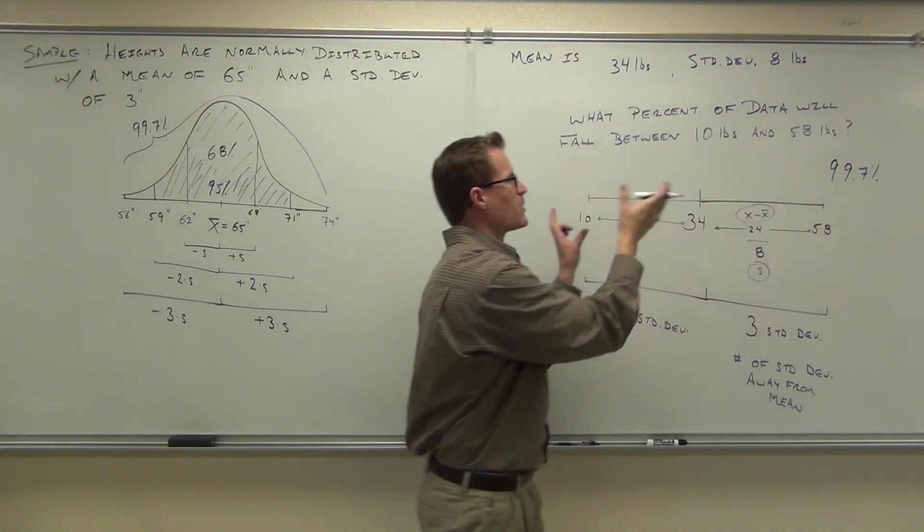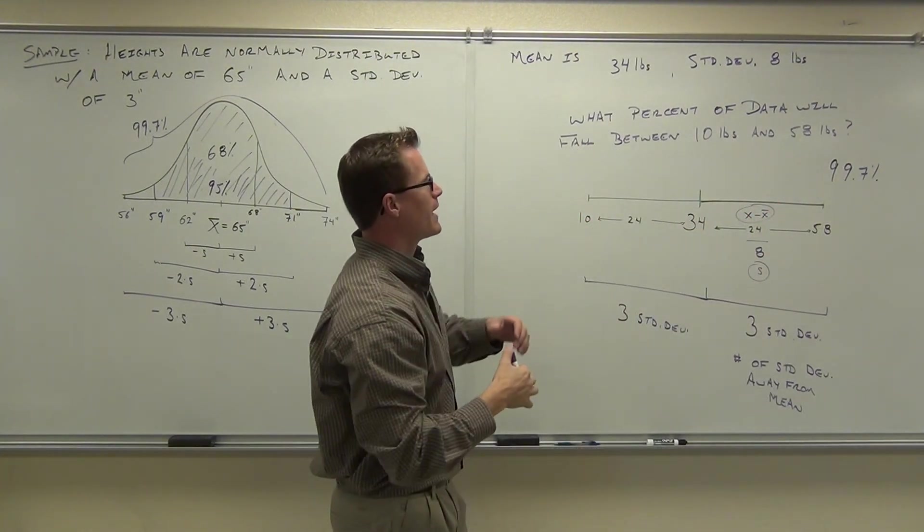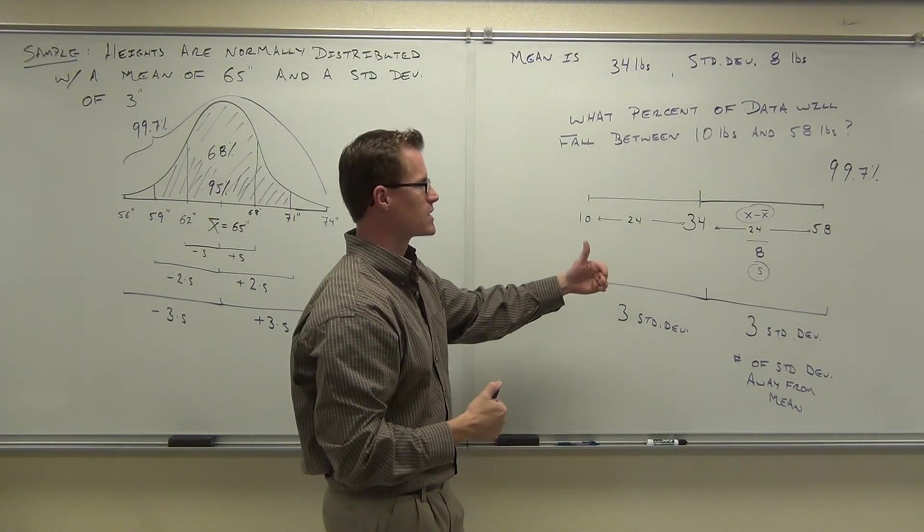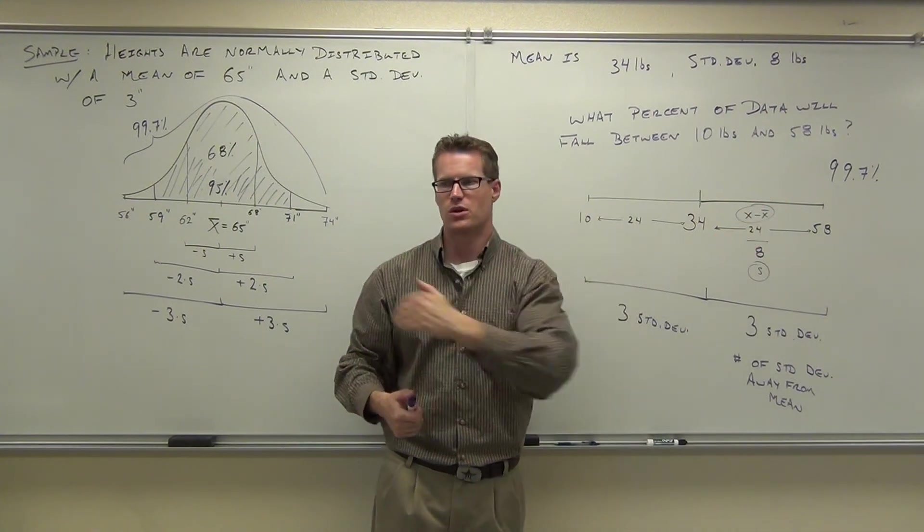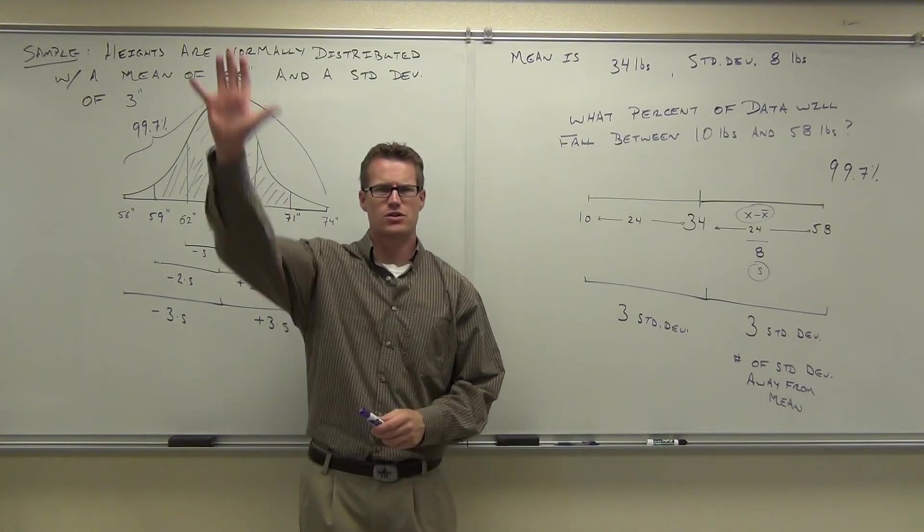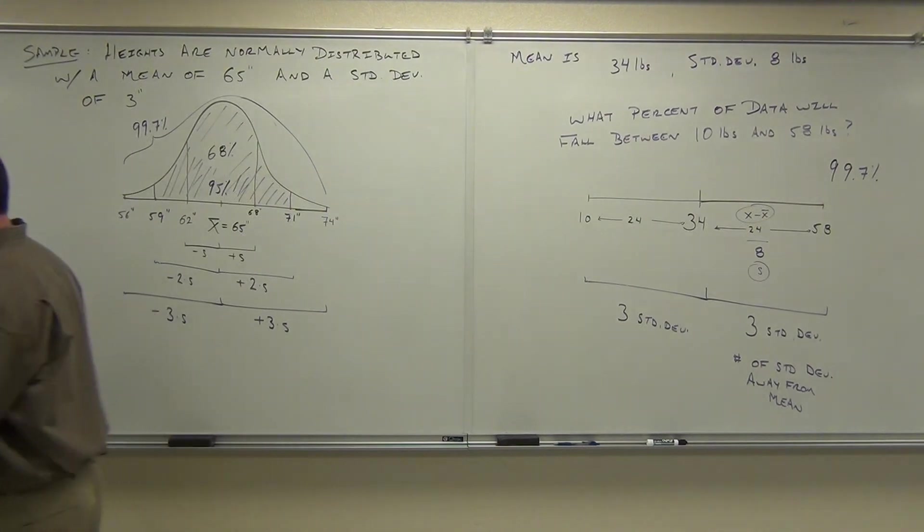So whatever population or sample I'm working with, in this case, it's sample. Whatever sample I'm working with, we had an average of 34 pounds. Standard deviation was 8 pounds. So what I can tell you is that if I go from 10 pounds to 58 pounds, that's going to cover almost darn near everything in there, 99.7% of our data values. How did you have understood what we talked about so far? Good. Now the last thing, it's a very quick thing.